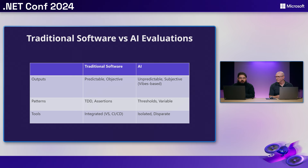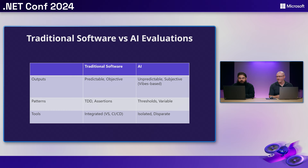Couldn't you just write a test for it? Sure, except there are a few differences between traditional software and AI evaluations. In traditional software, given a particular input the output is predictable — true is true, false is false. With AI it's different — it's unpredictable because language models are probability-based, predicting the next likely word after a sequence of text, which makes outputs unpredictable even with the same input.